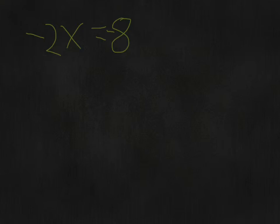We're going to start with an easy problem. In this question, you have -2x = -8.